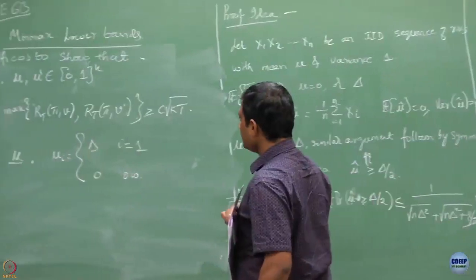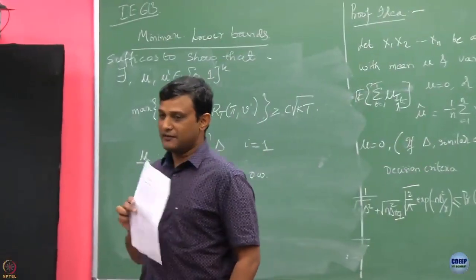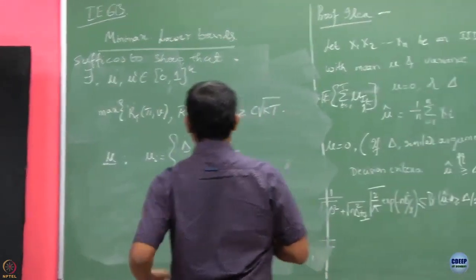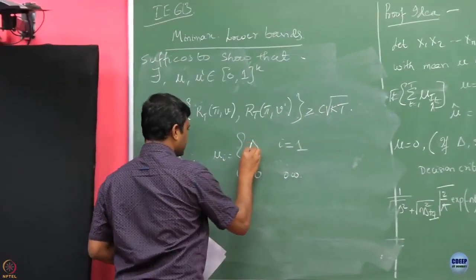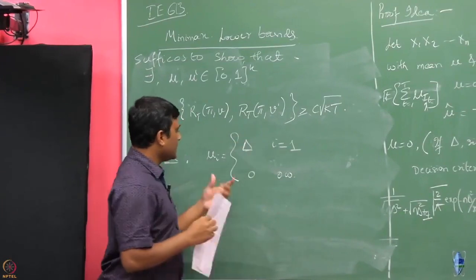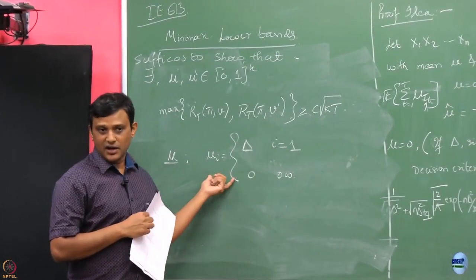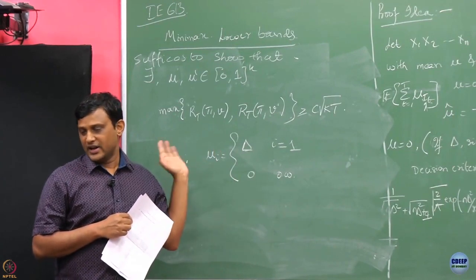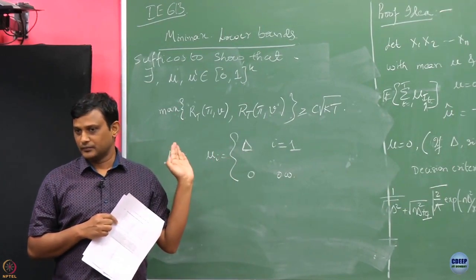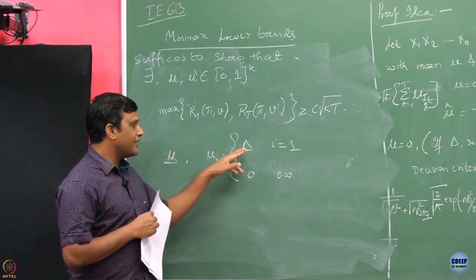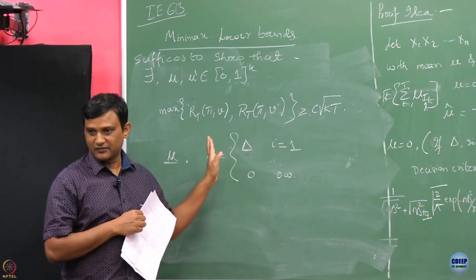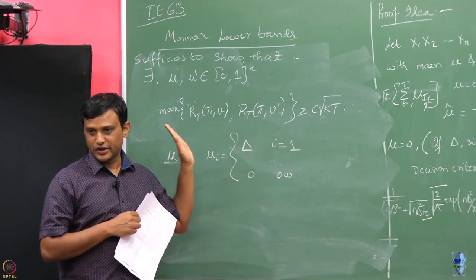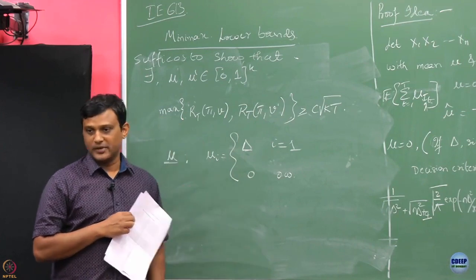If it is fine for sub-Gaussian, it is automatically implied for the bounded case. So I am looking for one bandit instance where the first arm has mean delta and all others have mean 0. How delta is chosen we have not yet specified; just for now assume that delta is strictly positive and the other arms have 0 mean.